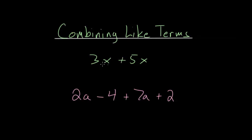So for this first one we have 3x plus 5x. So essentially we have three of these x's and then we're adding five of these x's. We can combine these two terms because they are like each other, they each have an x in it, to make 8x.